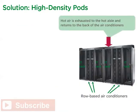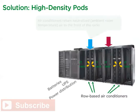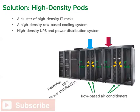High-density pods operate on the idea of isolating server exhaust heat and directing all of that heat into the air conditioner intakes, where the air is first cooled before being redistributed to the front of the servers. Although this course focuses on the cooling of high-density pods, it is also possible to power a pod with its own dedicated UPS and power distribution. This may be desirable in situations where the existing data center UPS is at capacity or is being phased out due to end-of-life, or when targeted power availability is required for a specific pod. The system pictured here integrates a cluster of high-density racks with a high-density row-based cooling system and high-density UPS and power distribution system in a pre-manufactured, pre-tested pod.